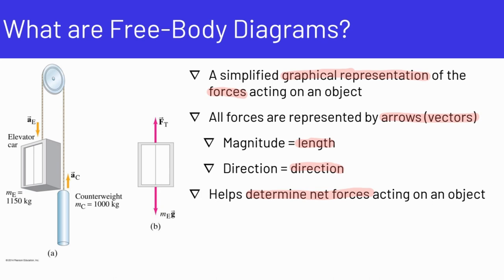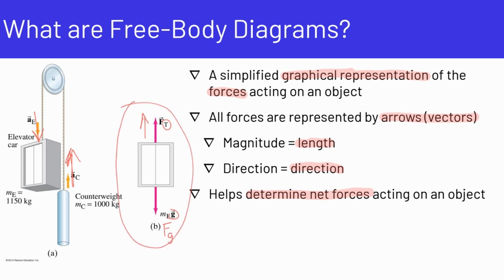We have an example of a free body diagram here. We have the illustration of an elevator which is moving downward, and the counterweight which is moving upward. In the free body diagram, we have an arrow representing the force of tension — that's a little T — and we have the mass of the elevator times gravity, which we often write as the force of gravity. So this is the free body diagram: a simplified version of the elevator drawing with just the forces drawn as arrows.